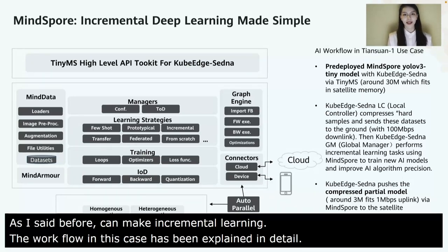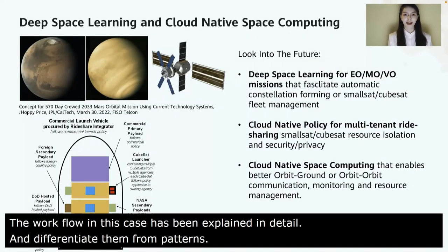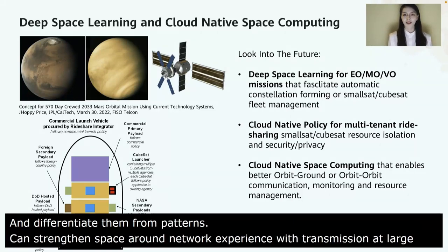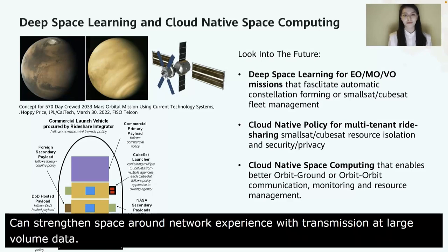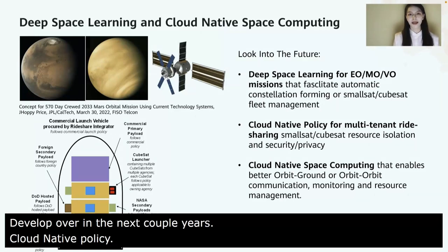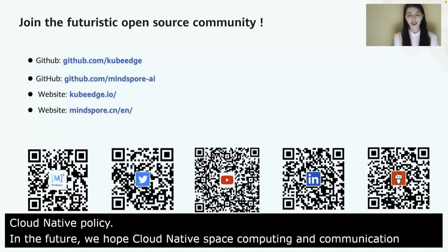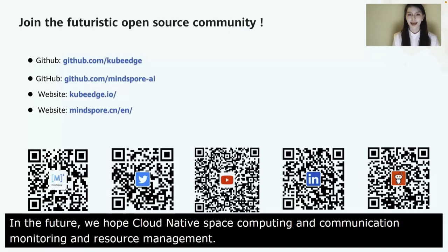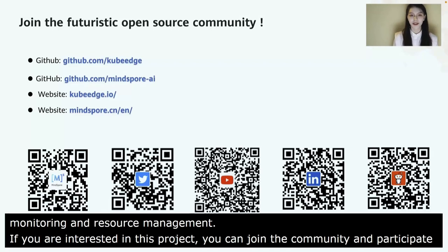This can ease the burden on space-to-ground networks constrained by the transmission of large-volume data. Since KubeEdge and MindSpore have many other amazing capabilities, we think a lot of AI technologies described above will be used and many applications will be developed over the next couple of years. In the future, we hope that cloud-native-based computing can enable better orbit-to-ground and orbit-to-orbit communication, monitoring, and resource management. If you are interested in these projects, join the community — scan the QR code and follow our channels.